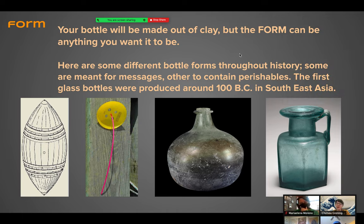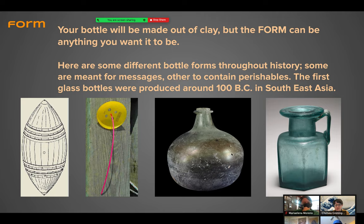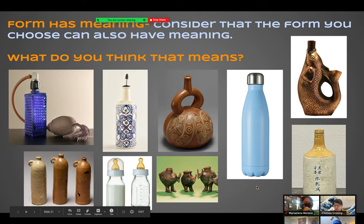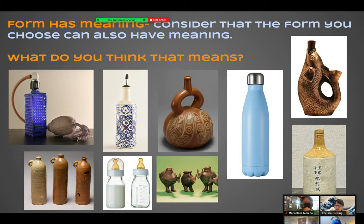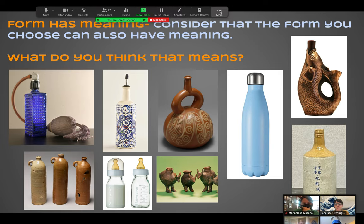Your bottle will be made out of clay, but the form can be anything you want — it doesn't have to look like a glass bottle. Here are some examples throughout history. The first glass bottles were produced around 100 BC in Southeast Asia. I want you to ponder the idea that form has meaning — the form you choose can also carry meaning. What do you think I mean by that?